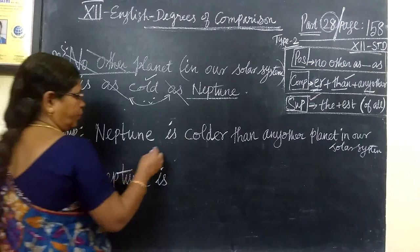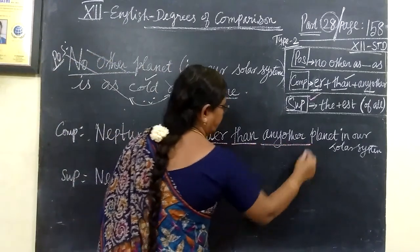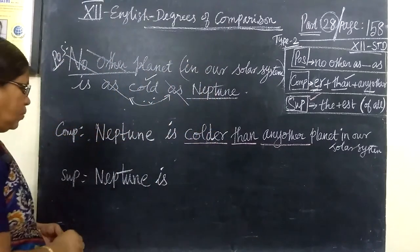So what do we do? First, we have the subject and verb. Here it's 'than any other planet.' Next, for superlative, the structure is 'the' plus '-est.'